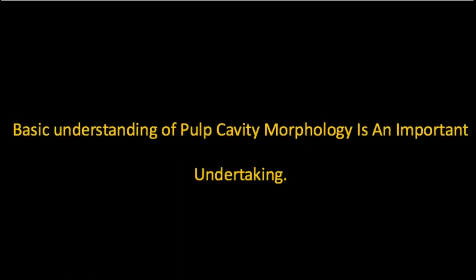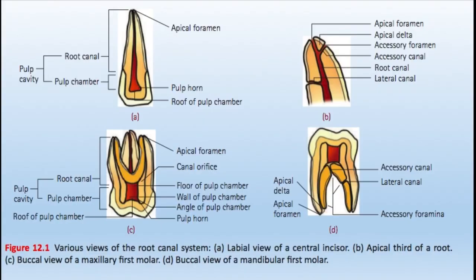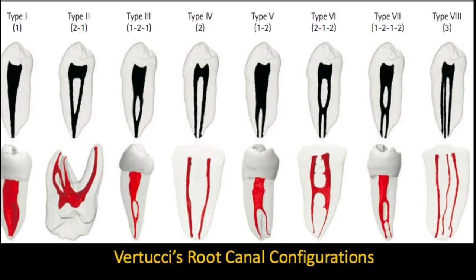Studying pulp cavity morphology is the basic necessity for your access cavity preparation. Your eyes will not be able to see what your mind does not know. So if you don't know the basic morphology of your pulp cavity, you will not be able to identify your canals. Knowing the basic morphology of pulp — like root canal, pulp chamber, apical foramen, accessory foramen, accessory canal, lateral canal — all these things are of great importance during your access cavity preparation.